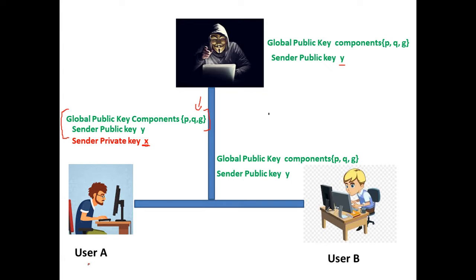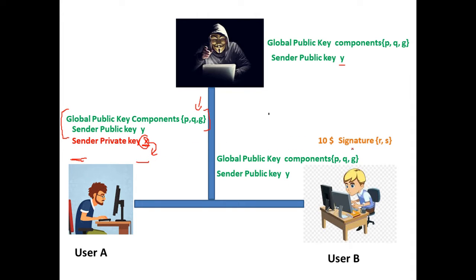User A also selects a private key X, which is very secret. When he wants to send a message — say $10 — he creates the signature R, S using the private key. The plain message plus the digital signature is sent to the receiver. The receiver uses the global public key components and user A's public key to validate the signature, confirming the message is from an authenticated source and that integrity is maintained.